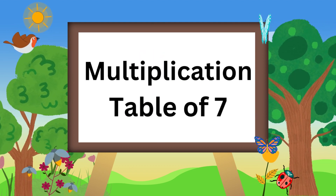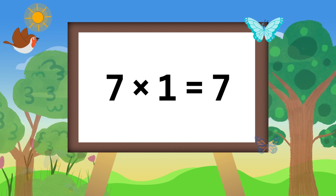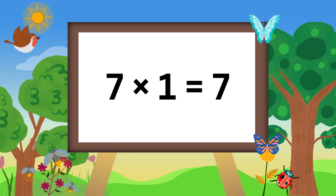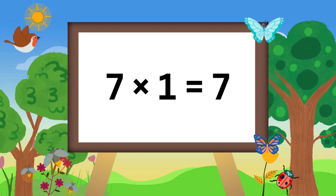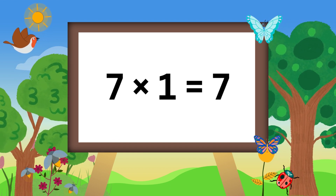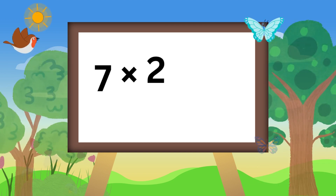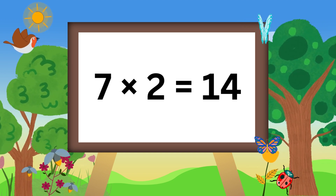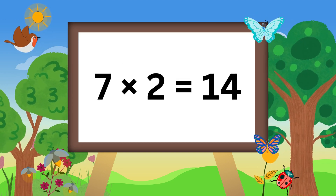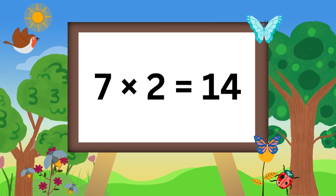Multiplication table of seven. Seven ones are seven. Seven twos are fourteen.